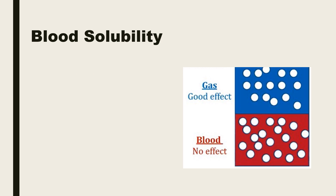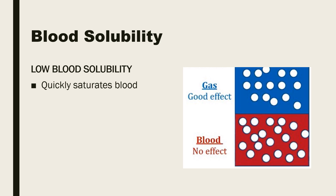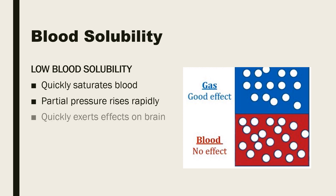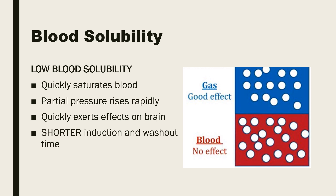The opposite is true for anesthetic gases that have low blood solubility. The blood cannot hold many molecules of these gases, so the blood quickly becomes saturated with as much gas as it can hold. This leads to the partial pressure rising rapidly and quick effects being exerted on the brain. Hence, anesthetic gases with low blood solubility have a shorter induction time — they put the patient to sleep more quickly — and they also wash out faster.